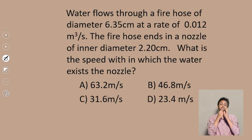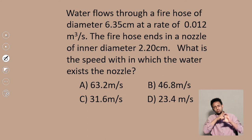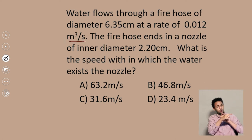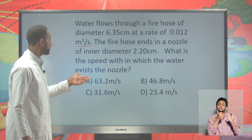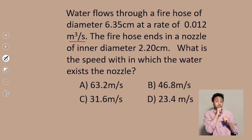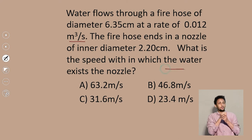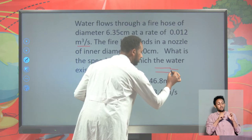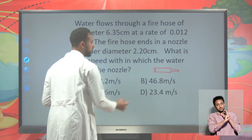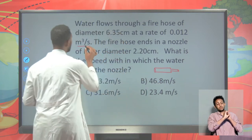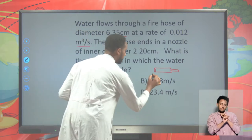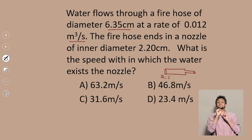Here is one example. Water flows through a fire hose of diameter 6.35 cm at a rate of 0.012 m³/s. The fire hose ends in a nozzle of inner diameter 2.2 cm. The diameter of the hose D1 is 6.35 cm, and the diameter of the nozzle D2 is 2.2 cm.